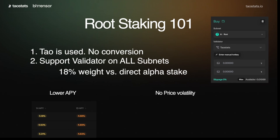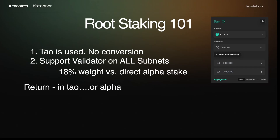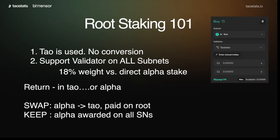The advantage of root staking is there's no price volatility. Your investment of TAO that you stake will always stay as TAO and will always stay at that value — you can't lose that initial investment. By default, your return is in TAO. But we can now also get that return in alpha, and that comes from a new term called swap or keep. Swapping means you're earning a little bit of alpha dust across all 128 subnets, which is converted into TAO, summed up, and paid to you on root — so it auto-compounds in TAO. That's the default and how root staking worked in the past.